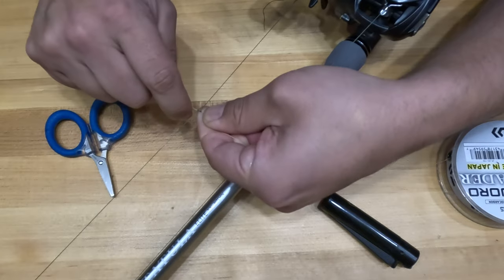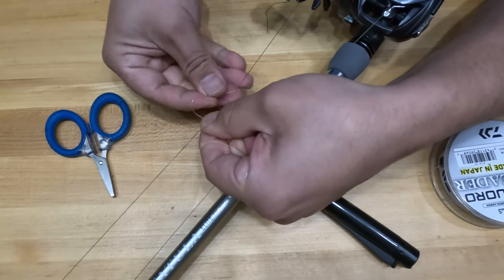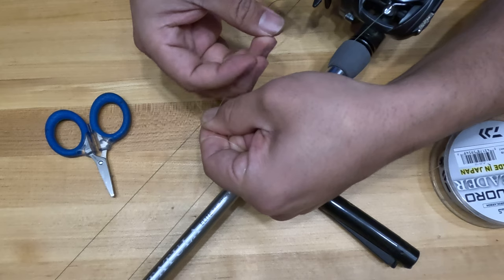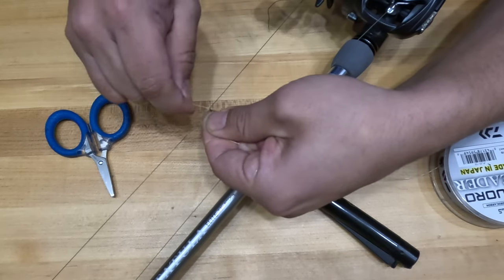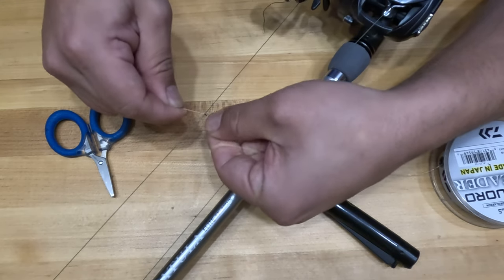The third wrap goes back towards the tip of the rod. The fourth wrap goes back towards you, towards the handle. Continue these steps, maybe 15 to 20 loops.